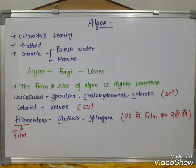Algae contain chlorophyll and have a thalloid structure. They are aquatic — found in freshwater and marine environments. When algae and fungi combine, they form lichen. Algae vary greatly in form and size.